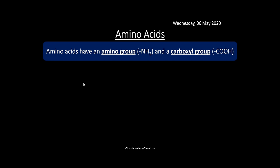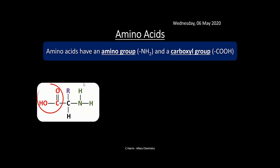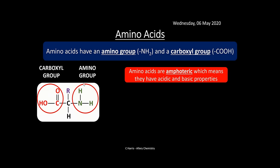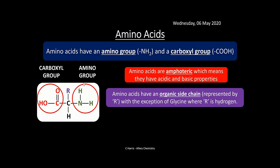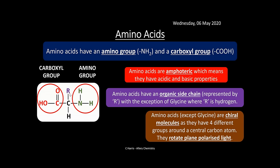Now let's look at amino acids. As the name suggests, they contain an amine group and a carboxylic acid group. They are the basic building blocks of life — what makes up proteins in our body. The carboxyl group is shown in red and the amino group in green. Amino acids are amphoteric, meaning they have both acidic and basic properties and can react in different ways. They always have an organic side chain represented by R, with the exception of glycine where R is a hydrogen.